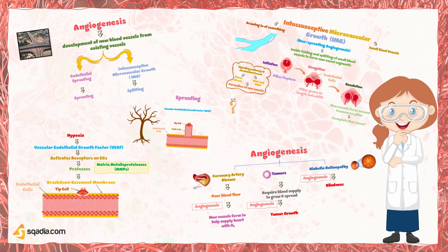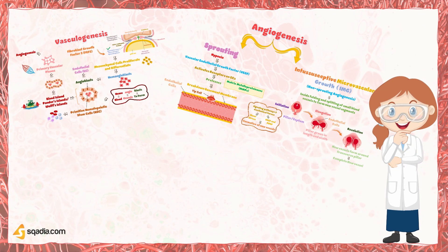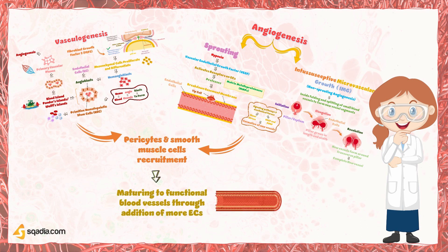Now that we've gone through both vasculogenesis and angiogenesis, it's worth noting that both processes are followed by the maturation of blood vessels. Pericytes and smooth muscle cells are recruited to the developing vascular network, providing structural support and stability, and eventually maturing into functional blood vessels through the addition of more endothelial cells and the deposition of extracellular matrix.